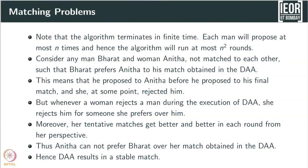Why does this algorithm terminate in finite time? Any man can propose to at most n women, so he proposes at most n times. Therefore the overall algorithm runs at most n-squared rounds and cannot go beyond. Thus this is a finite-time algorithm.